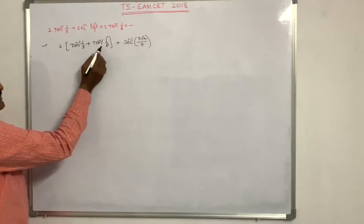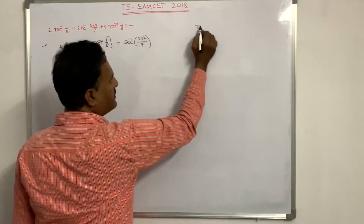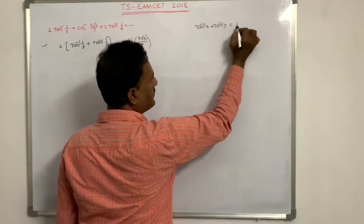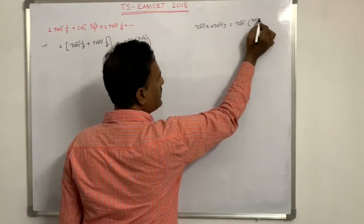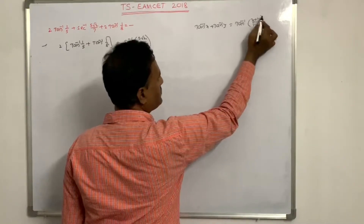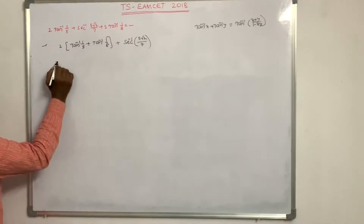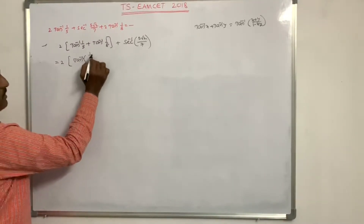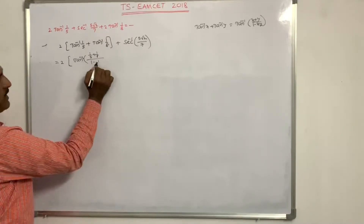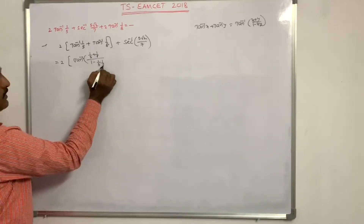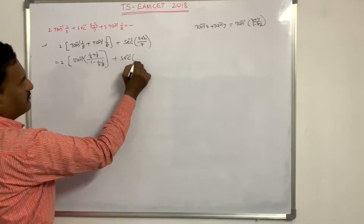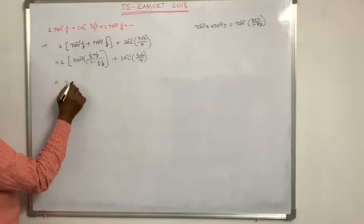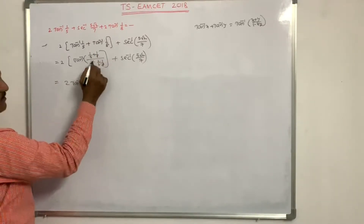Using the formula tan⁻¹x + tan⁻¹y = tan⁻¹[(x+y)/(1−xy)], this becomes 2 into tan⁻¹[(1/5 + 1/8)/(1 − 1/5·1/8)] + 2tan⁻¹(5√2/7). Taking LCM: 8+5=13 over 40, and 40−1=39 in the denominator.